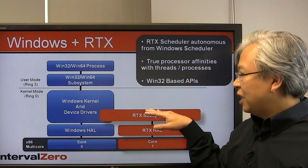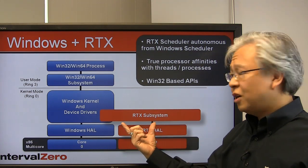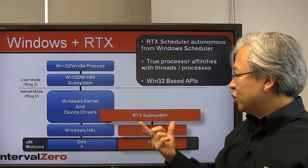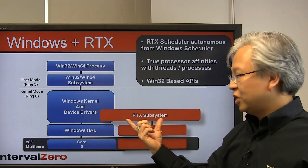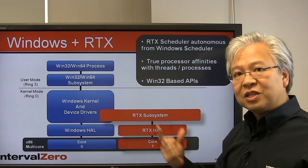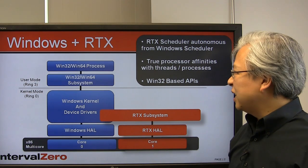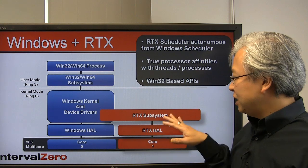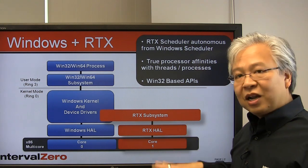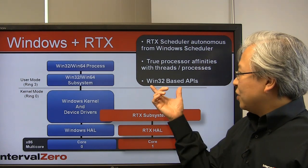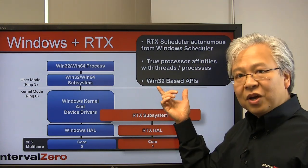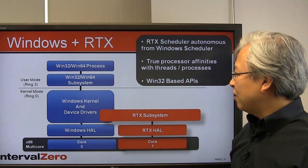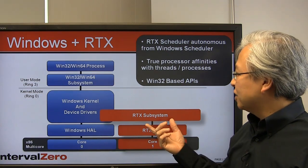The next layer up is the RTX subsystem, or the scheduler. This is a real-time scheduler under RTX, allowing you to schedule real-time threads and processes on the dedicated core. It supports a Win32-type API set for your applications.